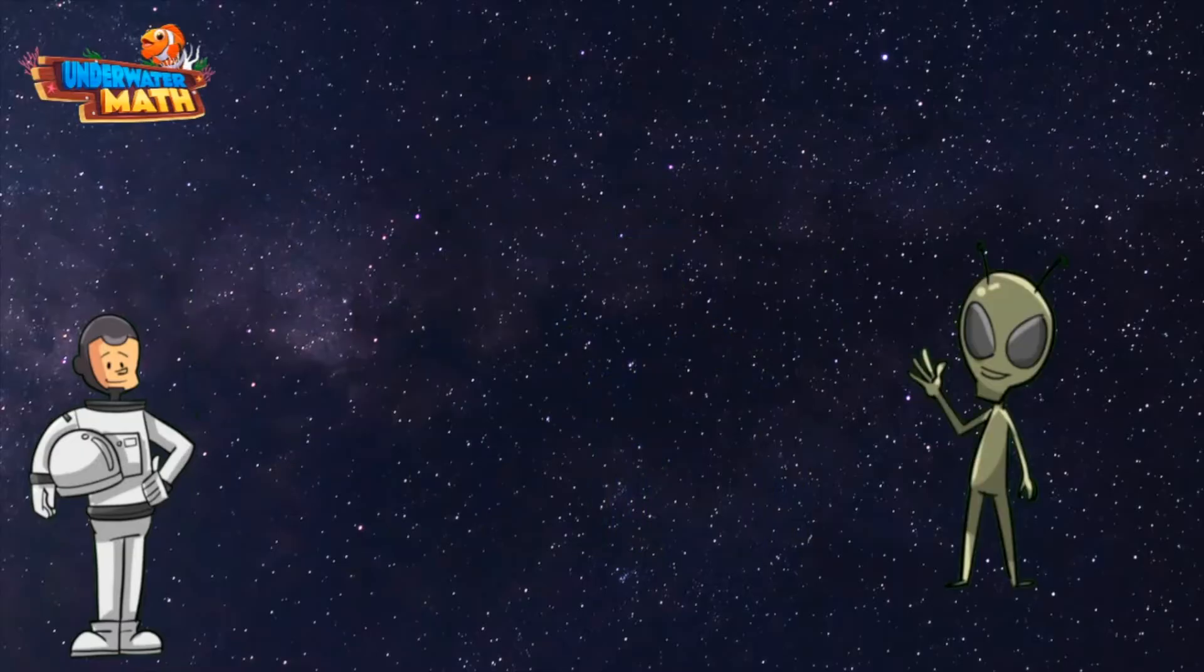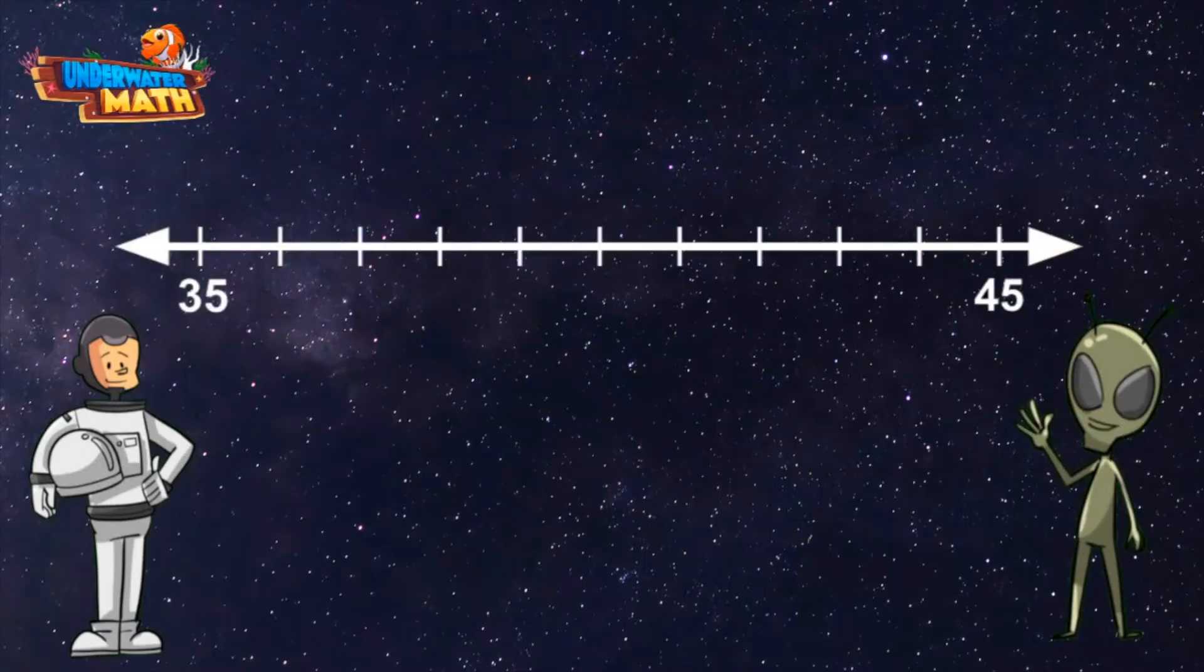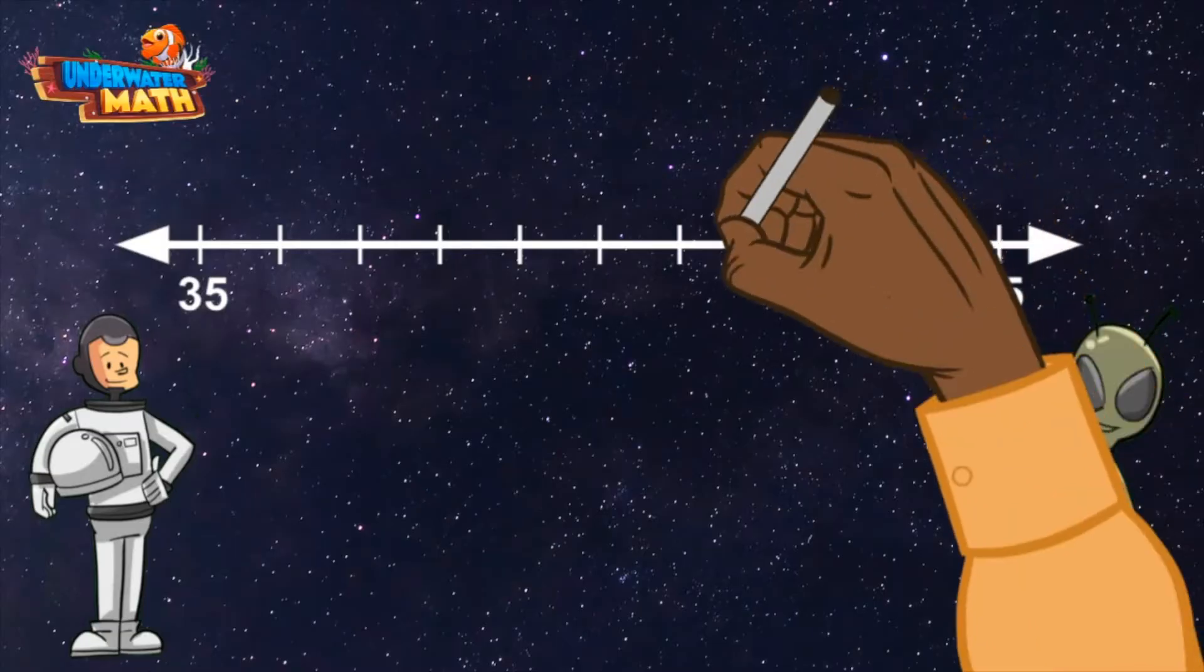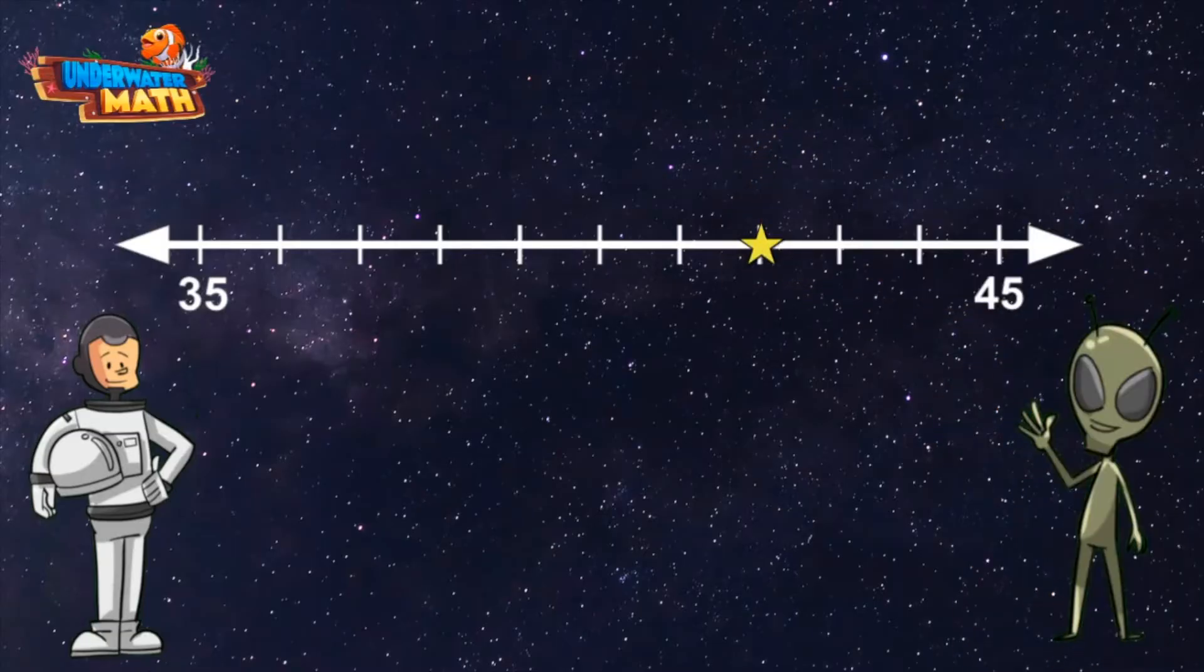That starts at 35 and ends at 45. Perfect, thank you. Now I'm going to put a star right here. We need to determine what number the star represents. We know the number line starts at 35, and each tick mark represents one whole number.